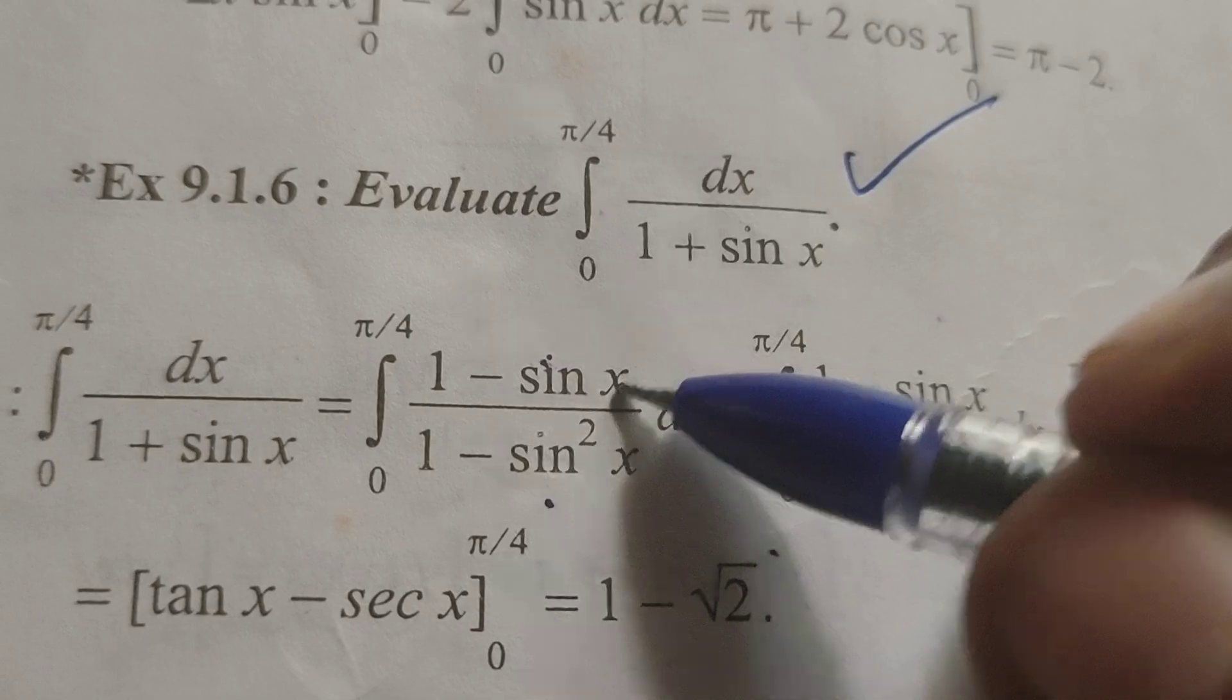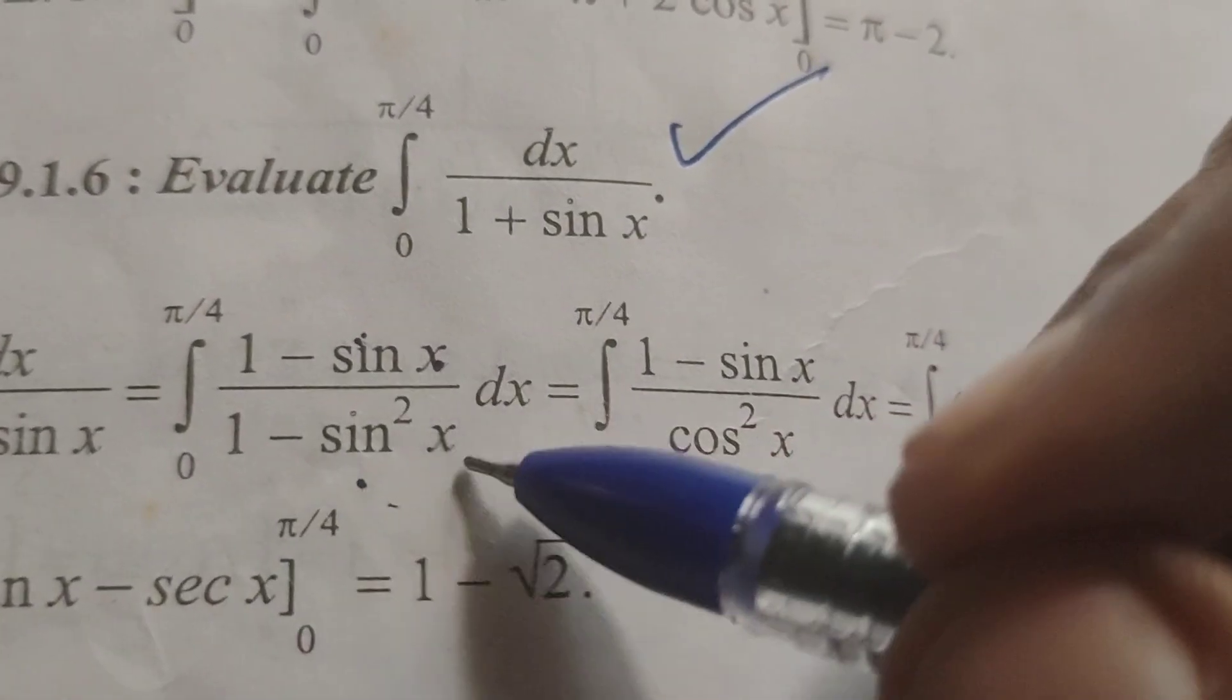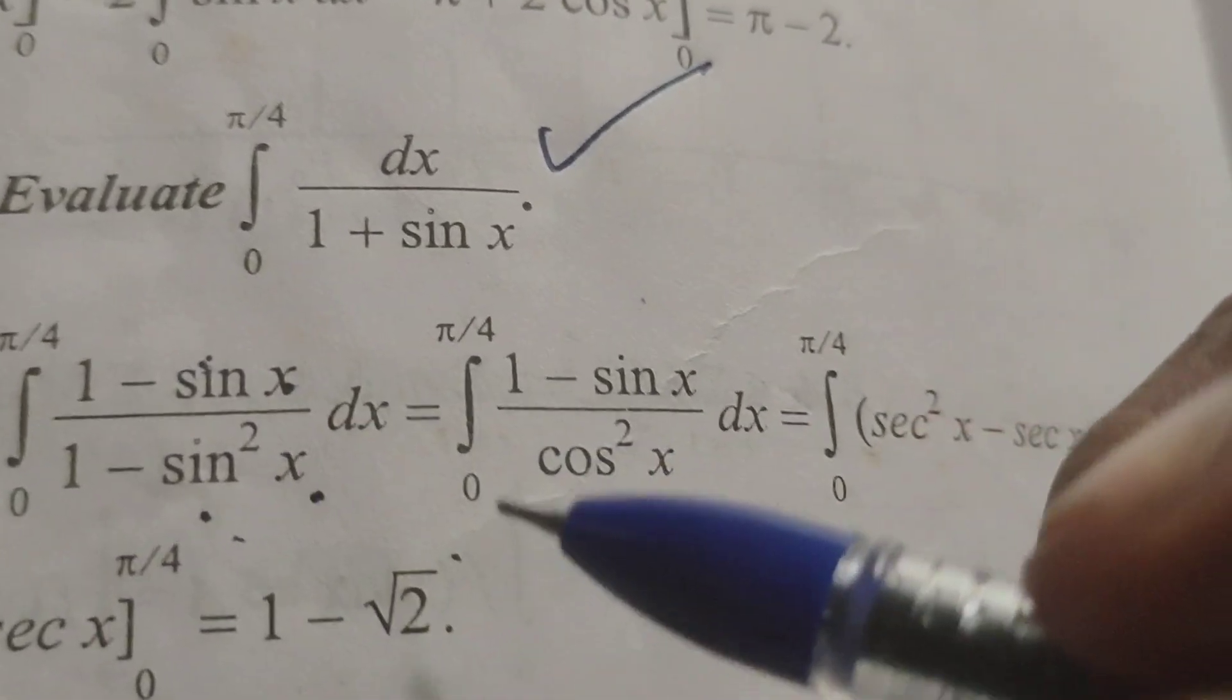Then we will get numerator 1 minus sin x. Here 1 plus sin x into 1 minus sin x gives 1 minus sin square x. According to using a plus b into a minus b formula.